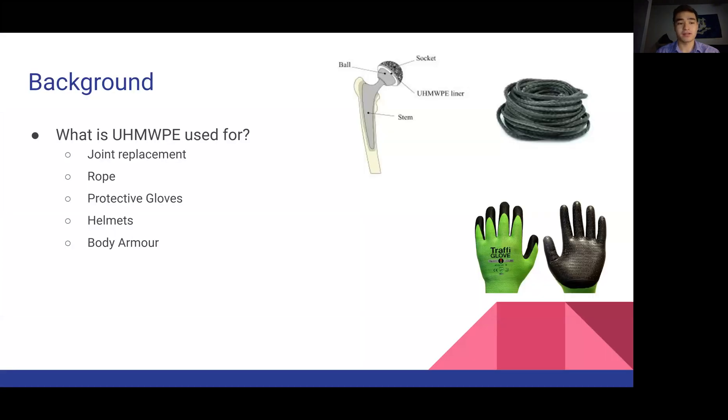A little background on ultra-high molecular weight polyethylene: what it is used for. Typical uses are joint replacement because of its strength and biocompatibility, rope, protective gloves, helmets, and body armor.